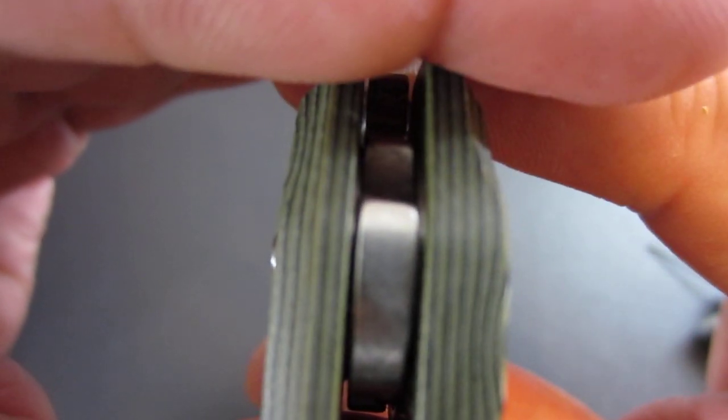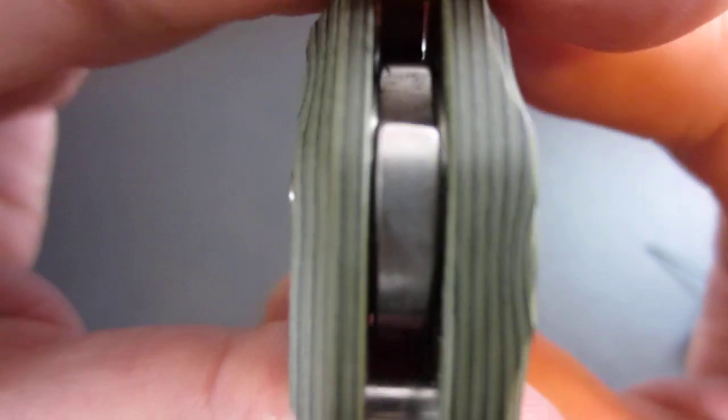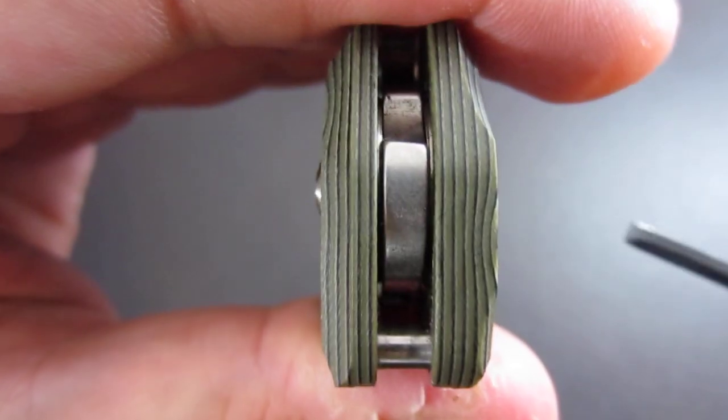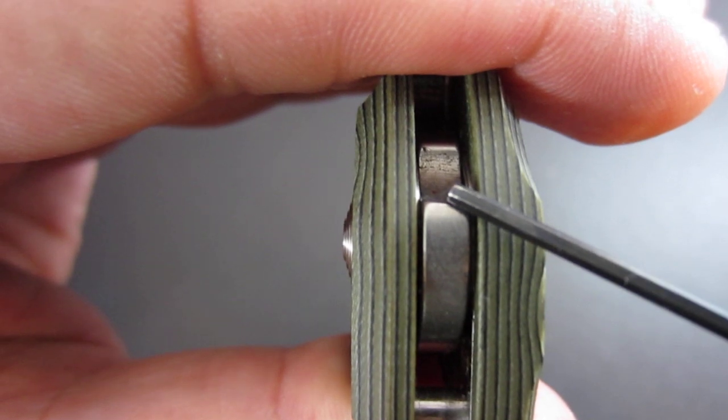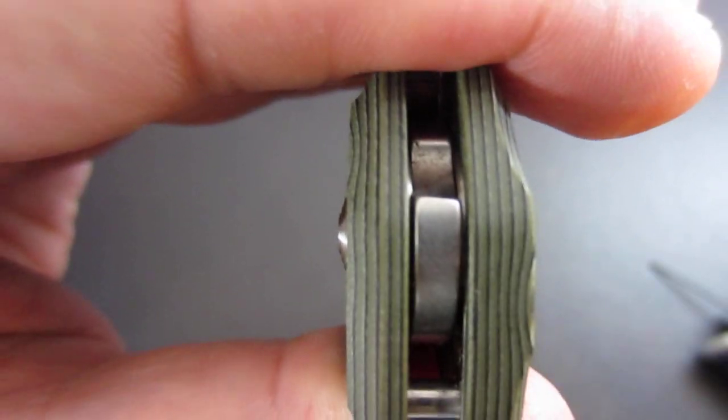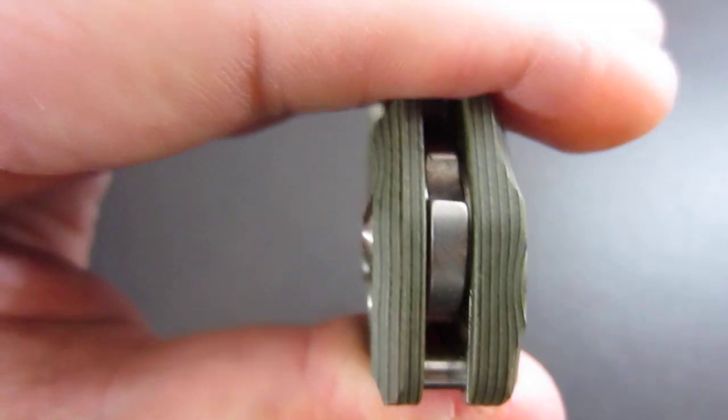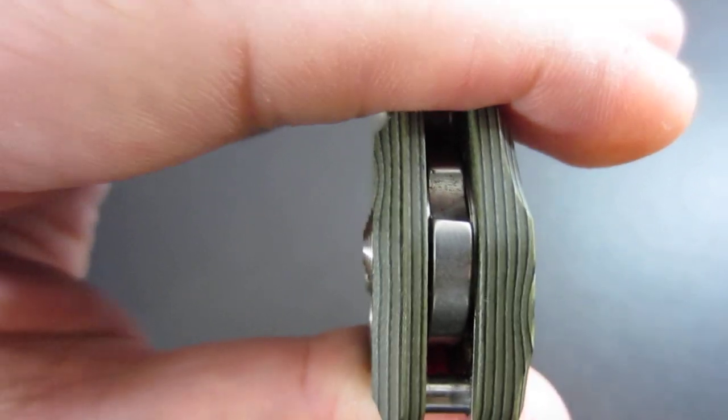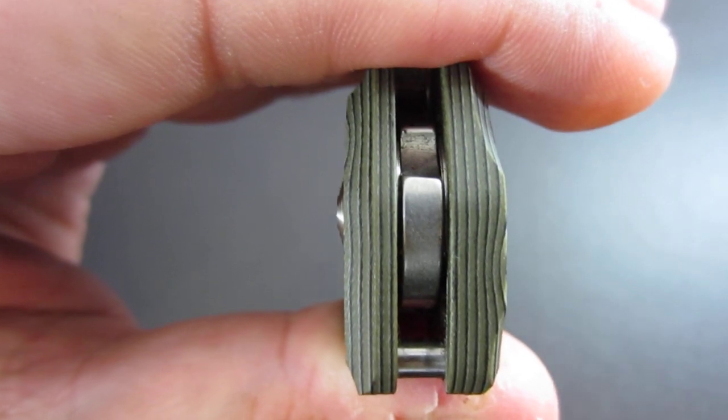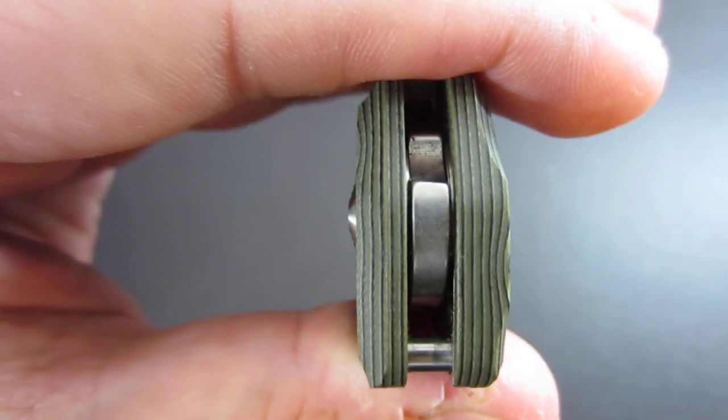Just like the principle with the Walker liner lock, as it starts to wear in, the drum will simply move forward, preventing play. Until it got so worn out that the drum was completely out, which is equivalent to the liner or frame lock moving all the way over to the other scale.